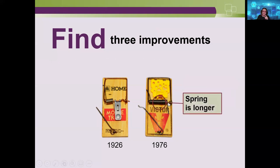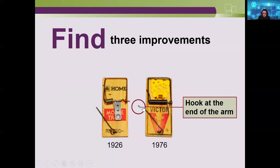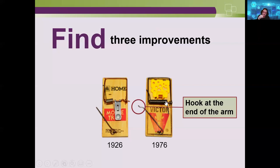The second improvement is a longer spring. The longer spring creates more force on impact. The third improvement is a hook on the arm that allows you to secure the little arm on top, holding the spring in place more safely. This makes it easier to set the trap so your fingers don't get caught — only the mouse does.